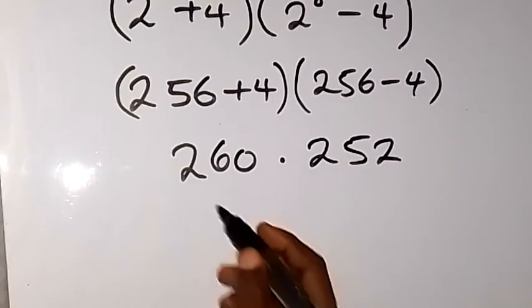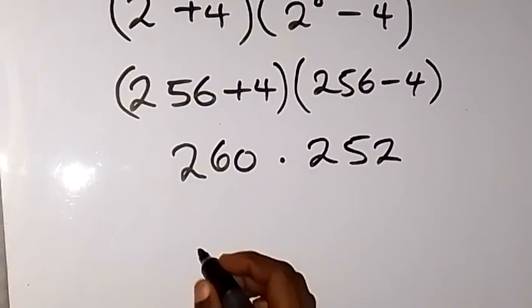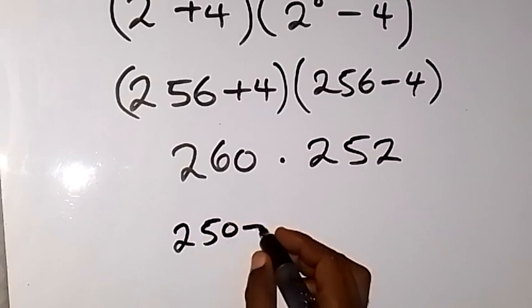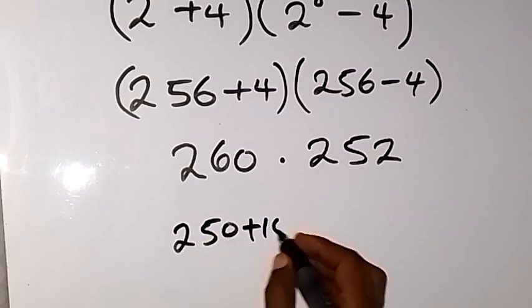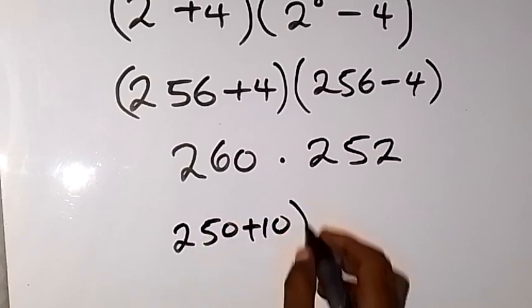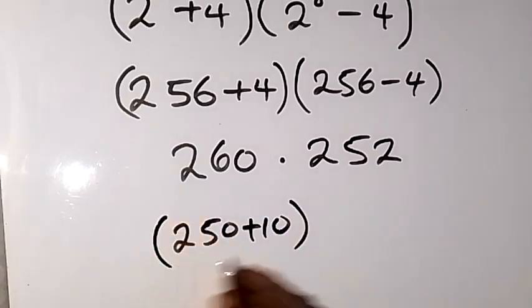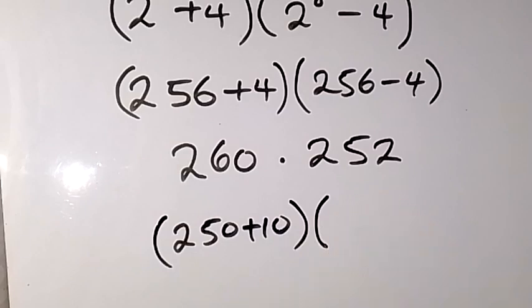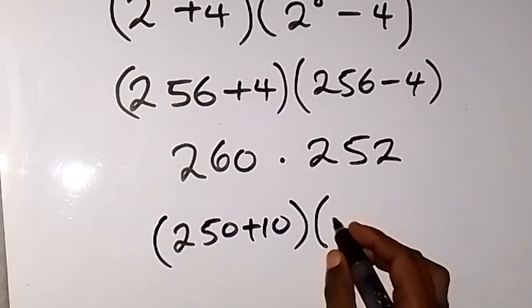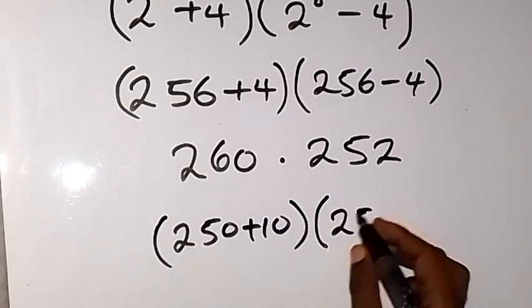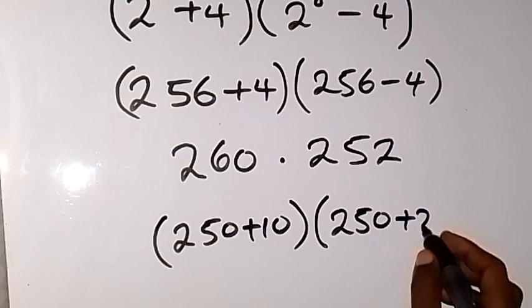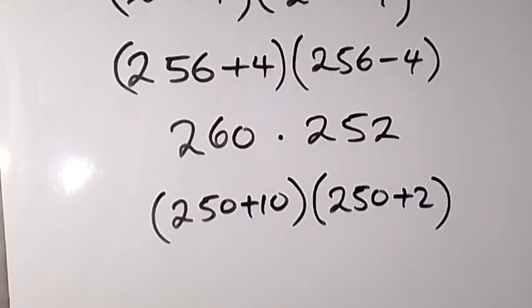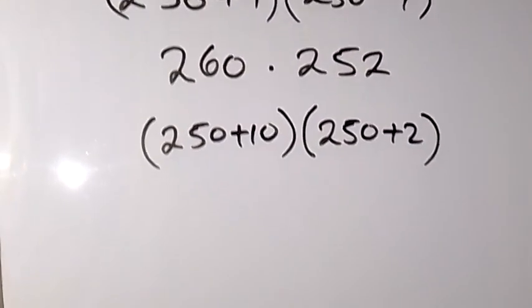In the next step, we write 260 as 250 plus 10, and 252 as 250 plus 2. From here we expand the bracket.